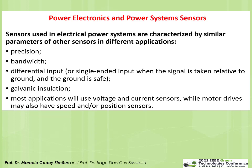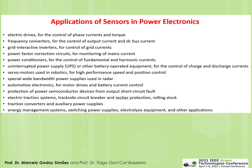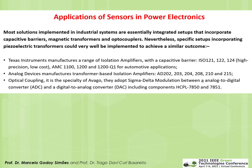In power electronics and power systems, sensors are characterized by their precision, bandwidth, whether they need a differential or single-ended input, and whether they provide galvanic isolation. Most applications use voltage and current sensors; motor drives may also need speed or position sensors. Power electronics applications include electric drives, frequency converters, and grid inverters.